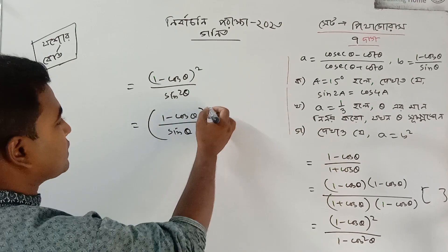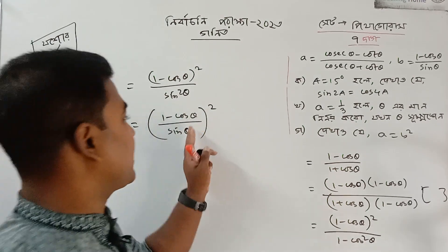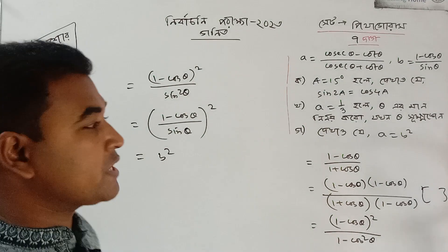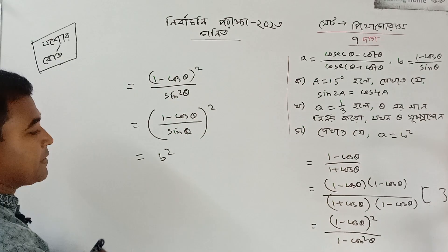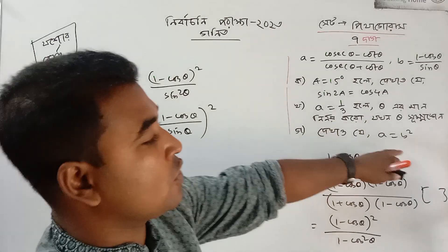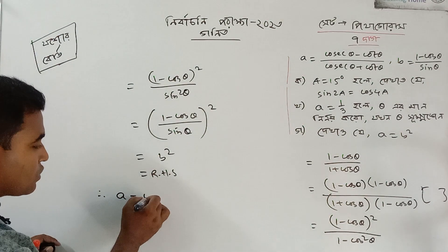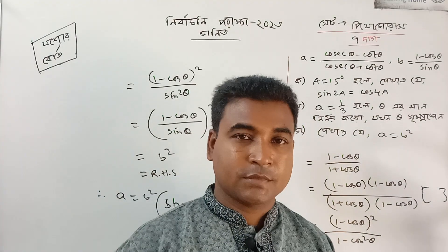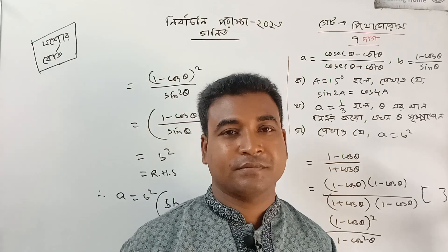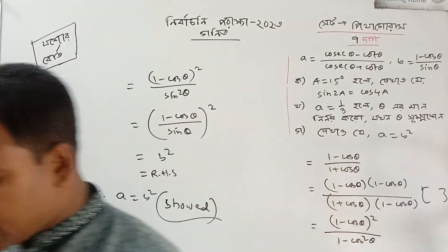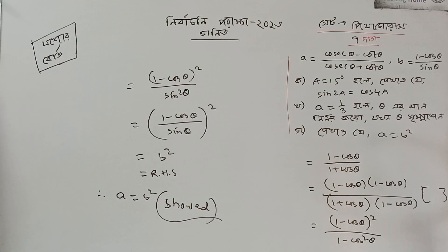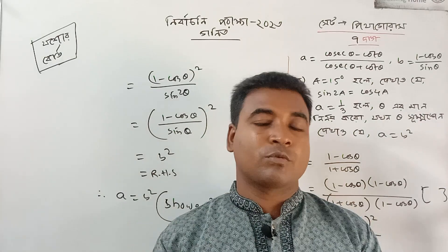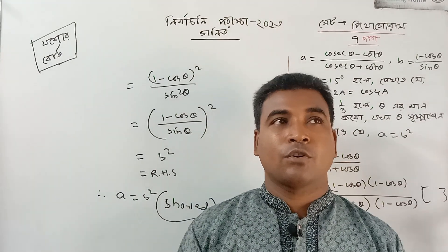So the result is equal to sin squared theta — that is b squared. Therefore a equals b squared. So, my students, I am giving you this class. If you liked the class, you can share your thoughts in the comments. Thank you.